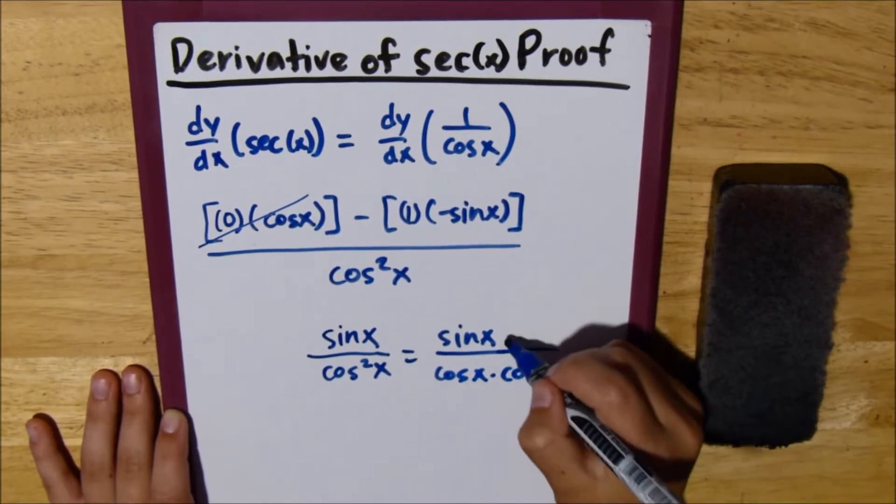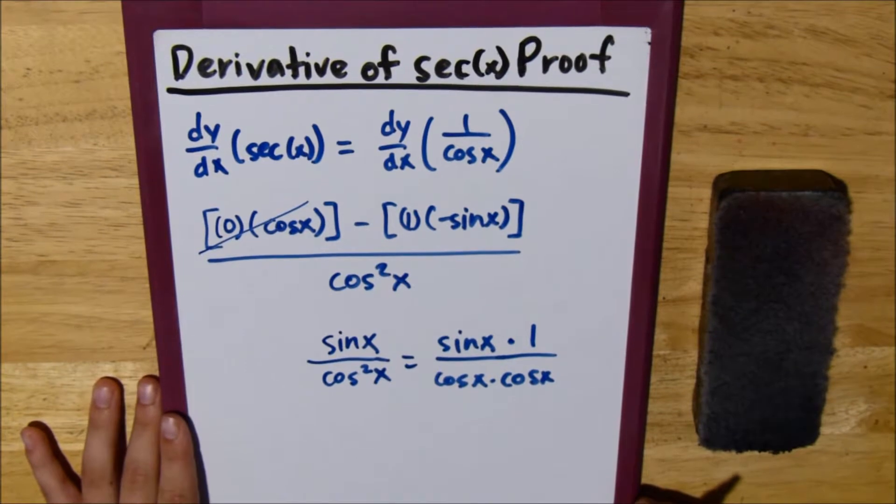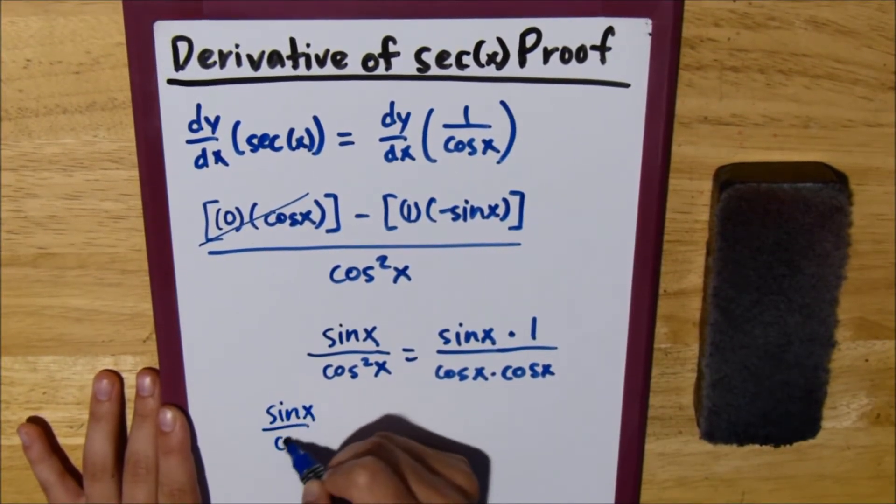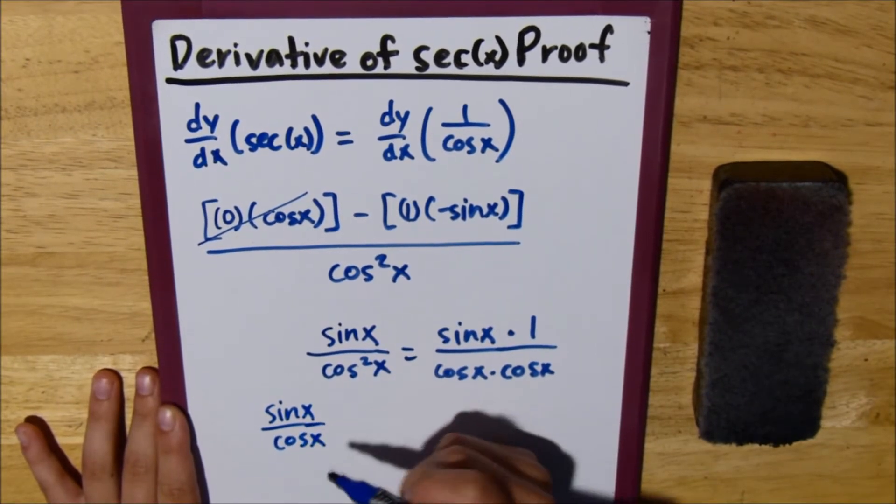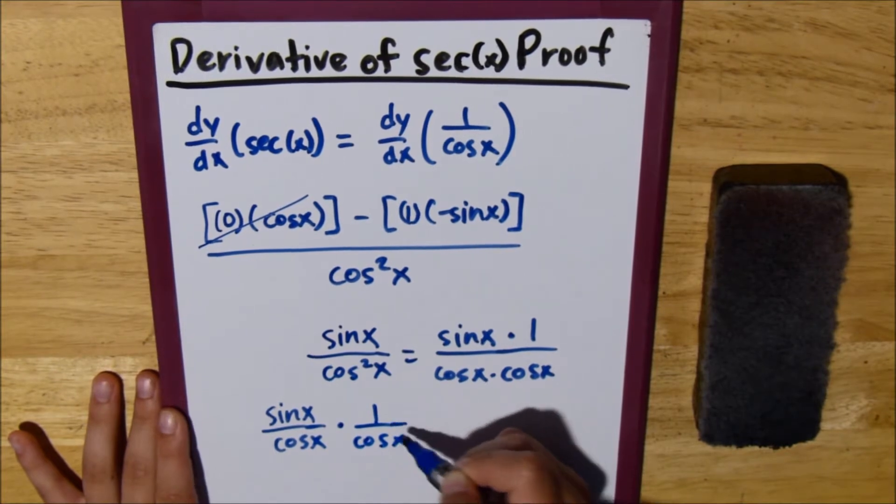We can split this into sine of x over cosine x times 1 over cosine x.